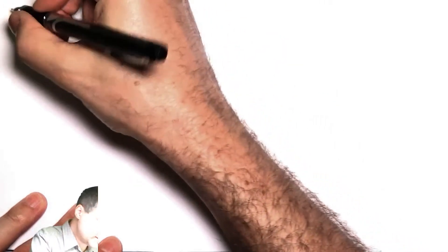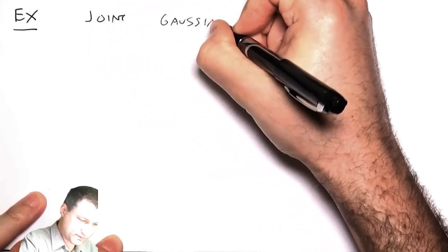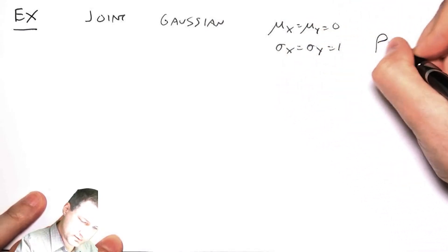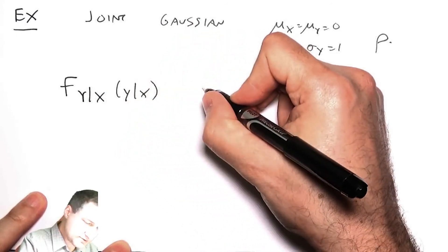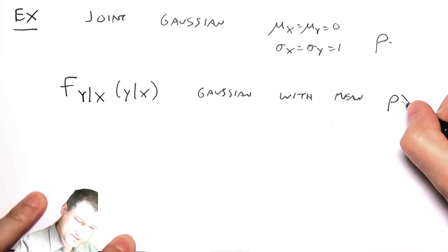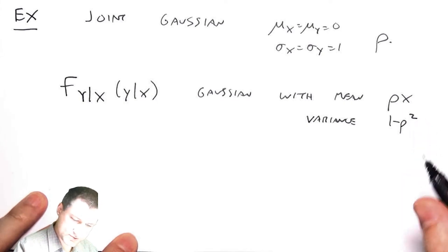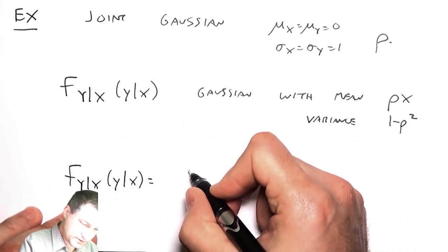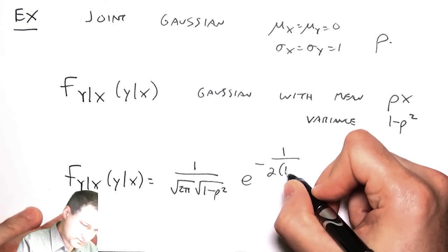Going back to the other situation we had, which was a continuous case. In a Gaussian case, again if we have a joint Gaussian, the same one from before, zero mean, sigma equals one, and some correlation coefficient rho, I know that the marginal here is Gaussian with mean rho x and variance one minus rho squared. So my joint PMF looks like this, writing in the definition.